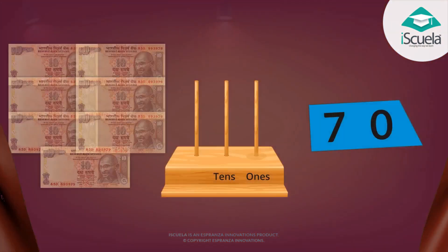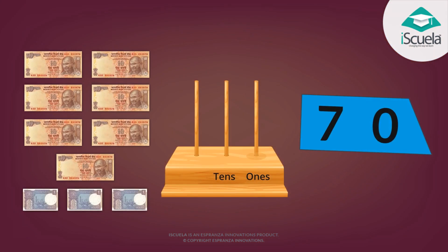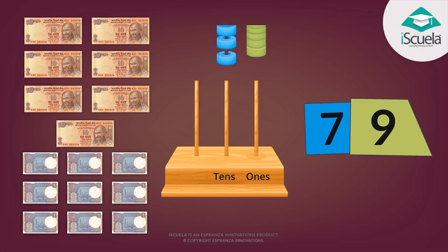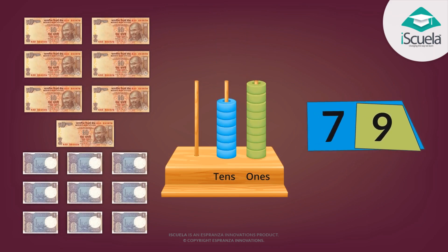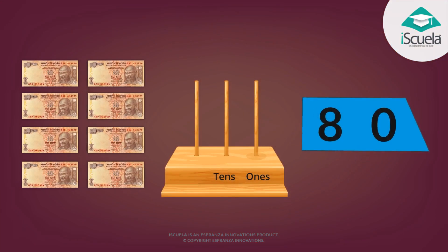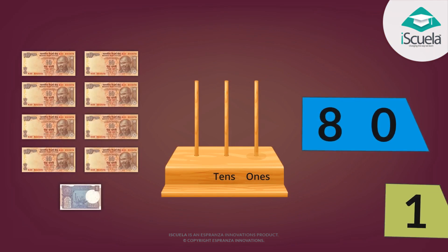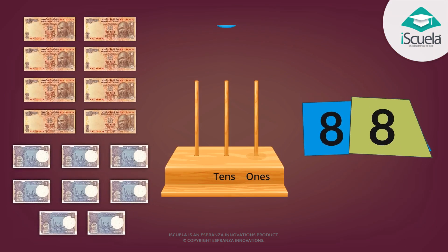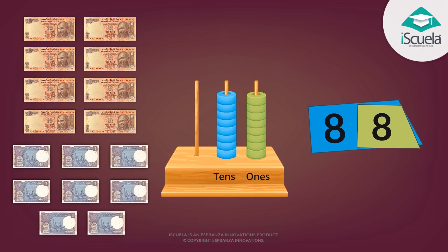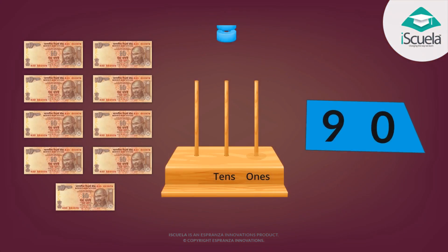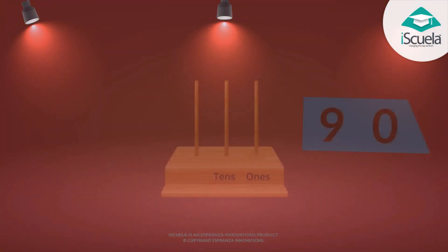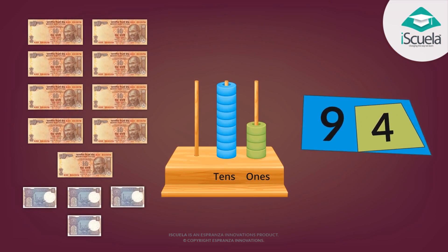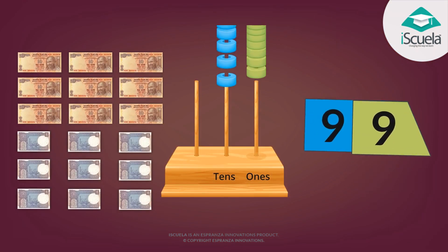And seventy. Seventy and three: seventy-three. Seventy and nine: seventy-nine. And eighty. Eighty and one: eighty-one. Eighty and eight: eighty-eight. And ninety. Ninety and four: ninety-four. Ninety and nine: ninety-nine.